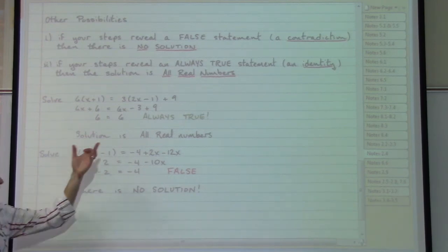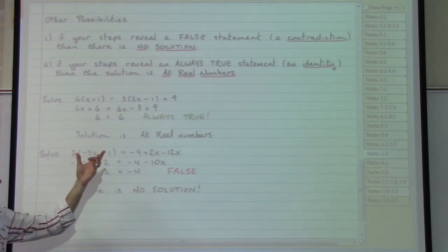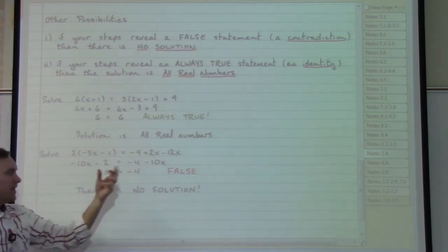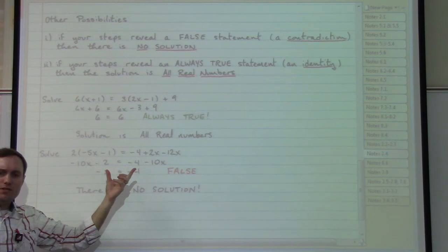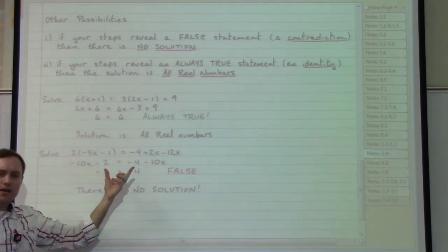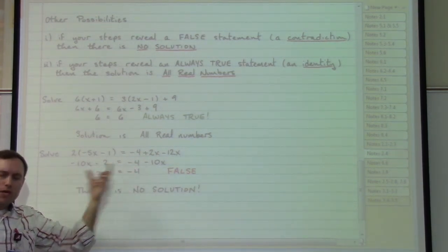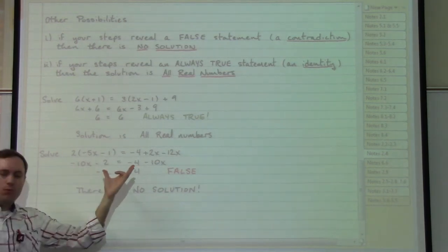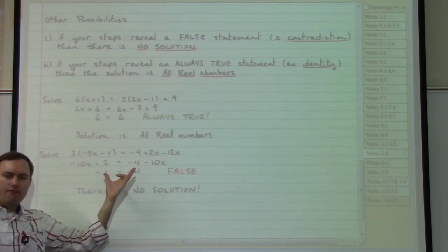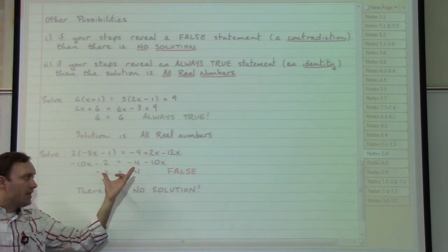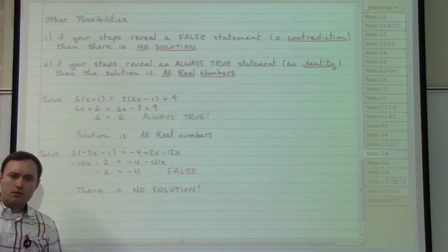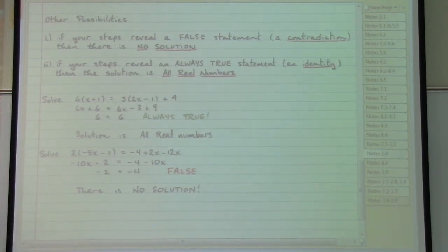Alternately, going through those steps of cleaning up the left hand side, cleaning up the right hand side, trying to combine our variable terms together, should those variable terms disappear and now leave us instead with a false statement, it would not matter what number you plug in for x. None of them at all will work because we will always end up with a false statement like this one. Negative 2 is never equal to negative 4. So we would say that there is no solution.